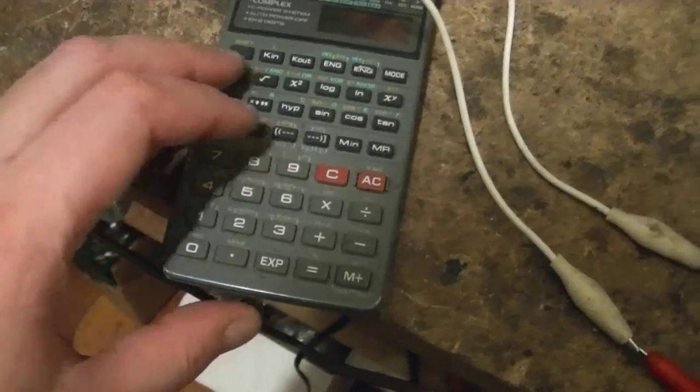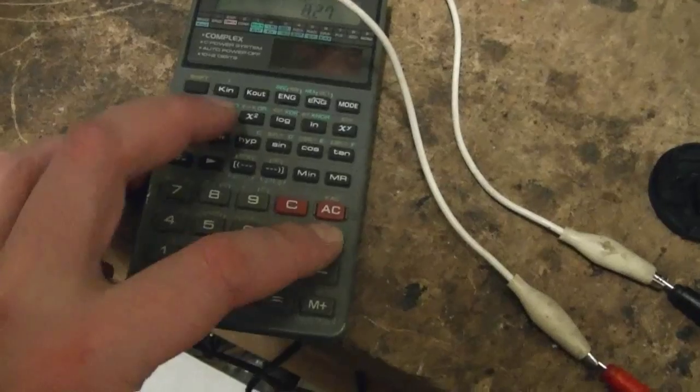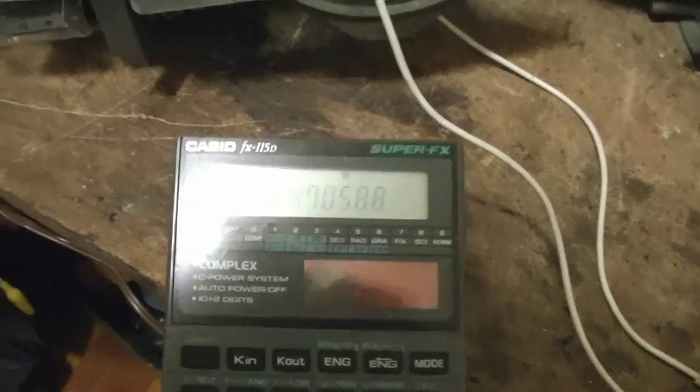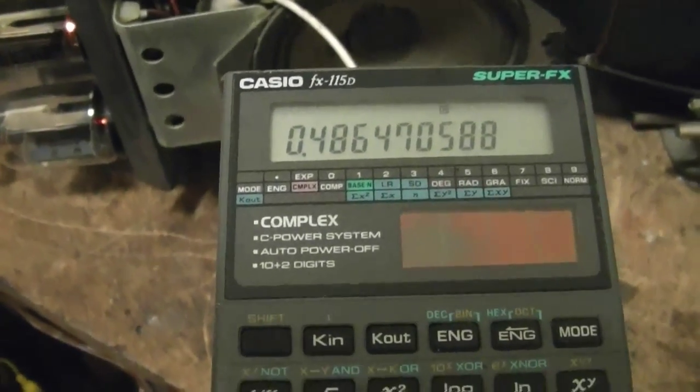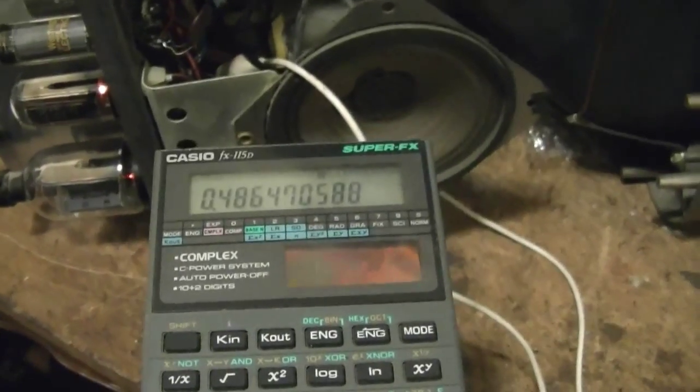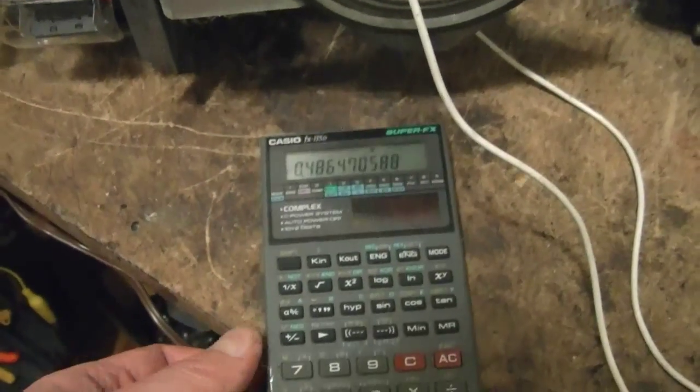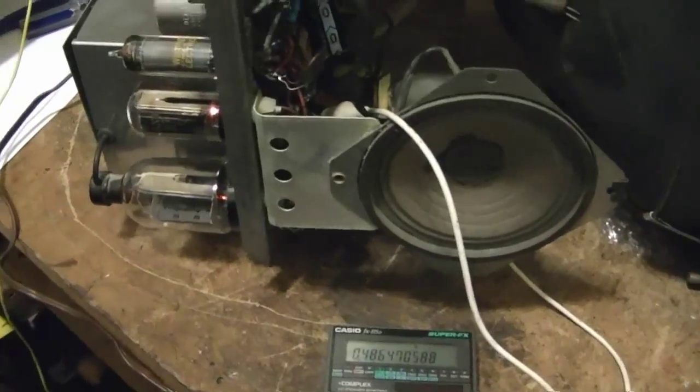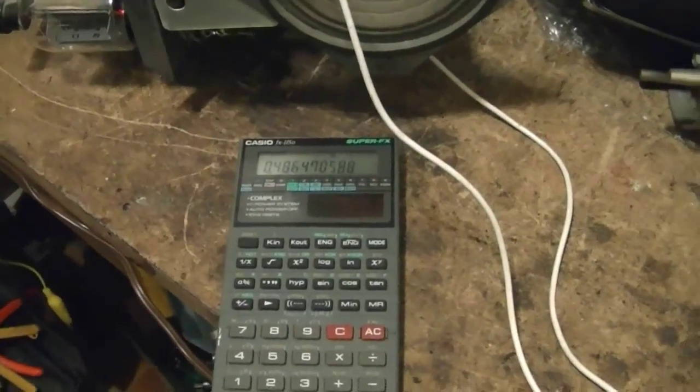If I do a little Ohm's law, I can figure out what the current actually is through this set. If I divide that voltage, 8.27, divide by 17 ohms, we've got, let's call it 0.49 amps. So it's a little high. I think I should bump that resistor up to more like 22 ohms to get that current down a little bit. Having more current run through the tubes is going to shorten their life, and I don't want to do that, especially on the picture tube.